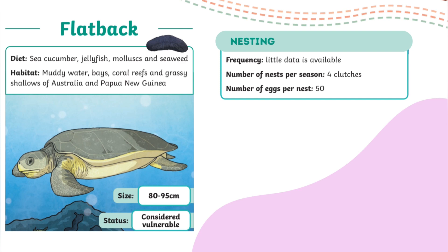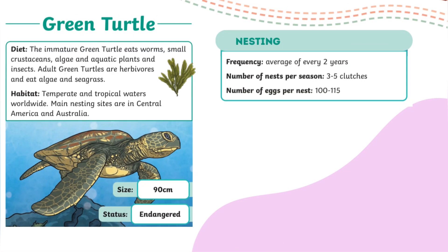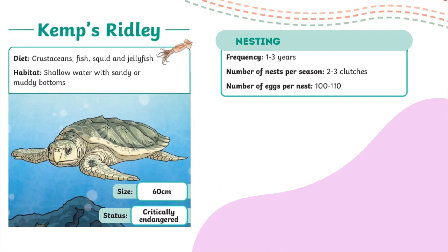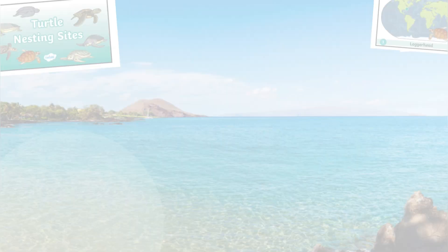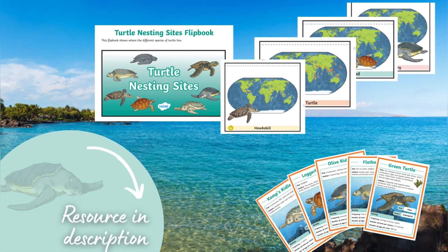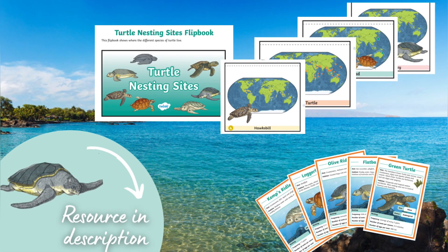One of the larger sea turtles, they can be up to 95cm long. Green turtles live in temperate and tropical waters across the world. They nest in Central America and Australia. Kemp's ridley turtles live in shallow water where the bottoms of the ocean are sandy and muddy. Unfortunately, these beautiful turtles are critically endangered. Find out about all the other types of sea turtle and where they nest in our resource — you'll find the link below this video.